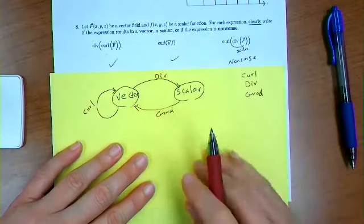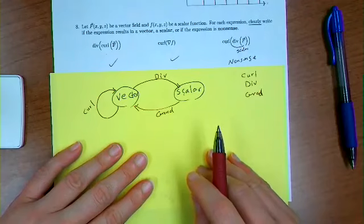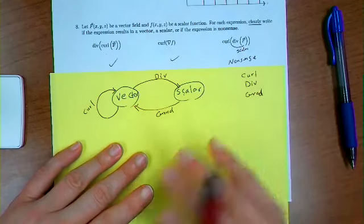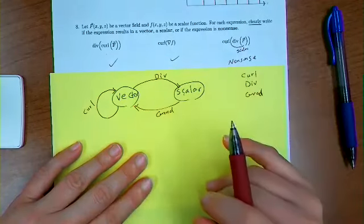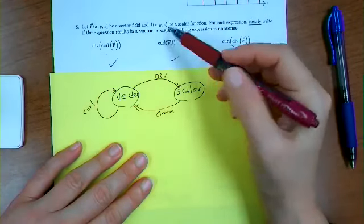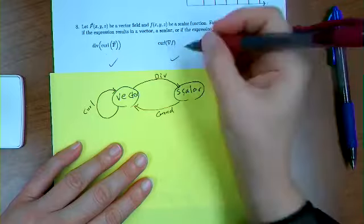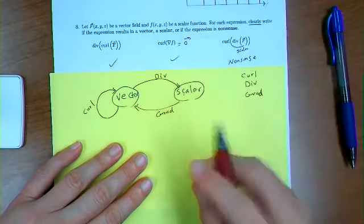These are all okay. And one thing that I want to mention is that these two statements are somewhat important for your next course. One thing that you know is that the curl of a gradient field or a conservative field is zero, so this is actually a zero vector.